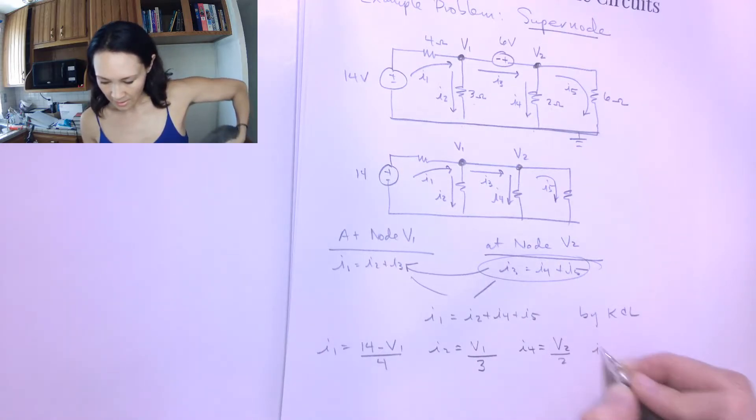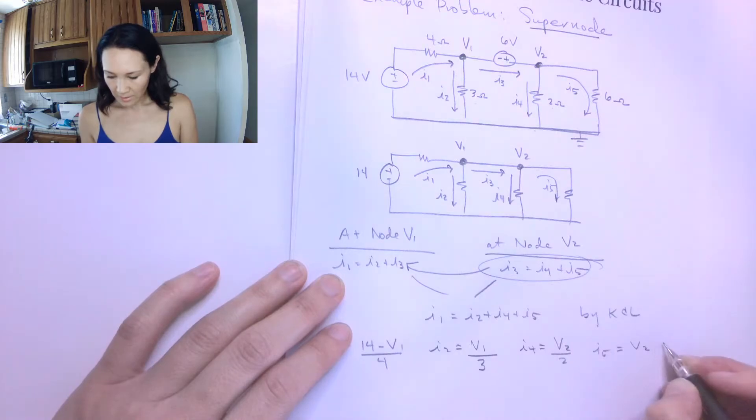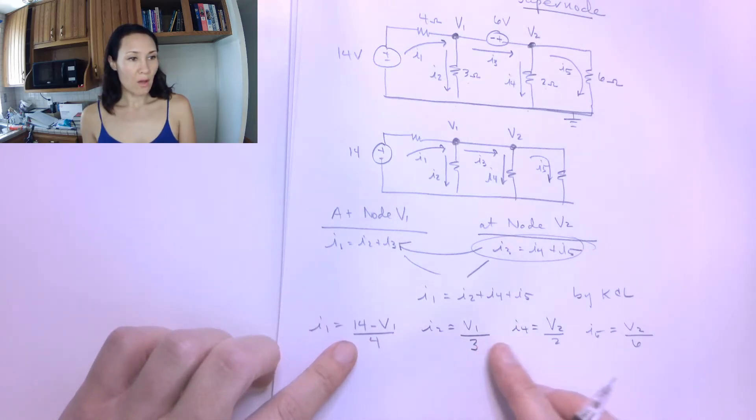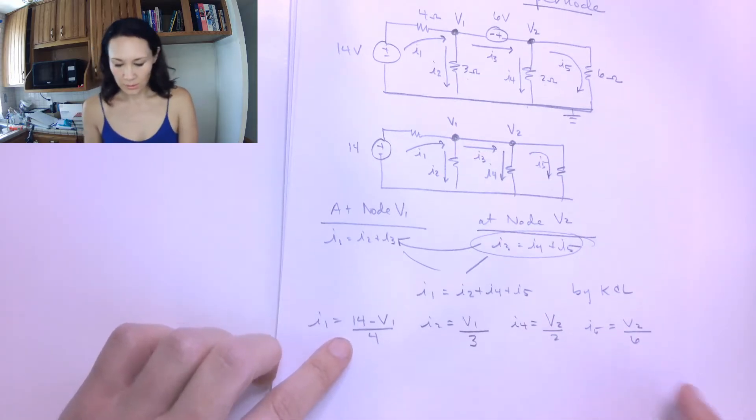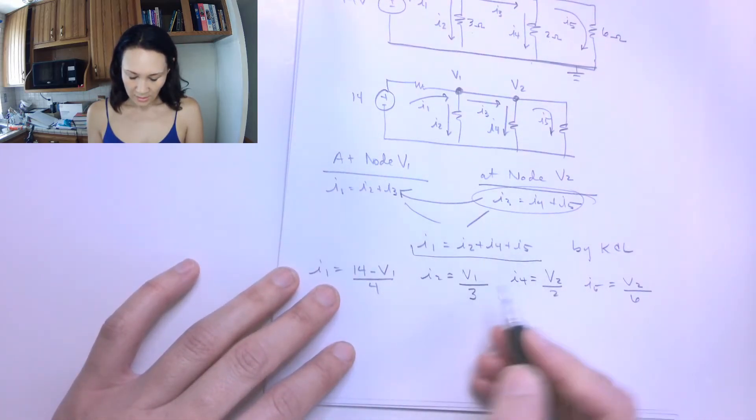And then my I5 is V2 minus 0 over the 6 ohm resistor. So now I've rewritten all of my I's in the equation in terms of the voltage at the node divided by the resistor between. So now I can make this substitution into this equation here.